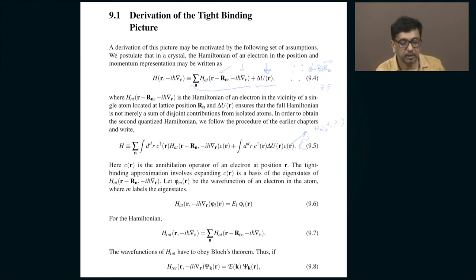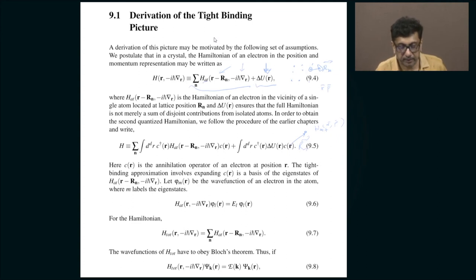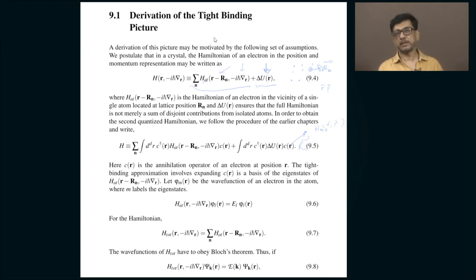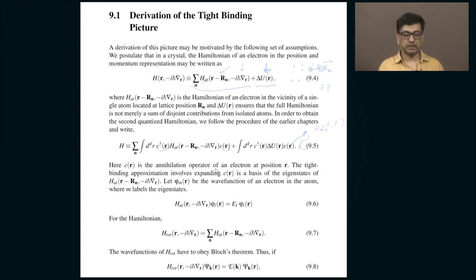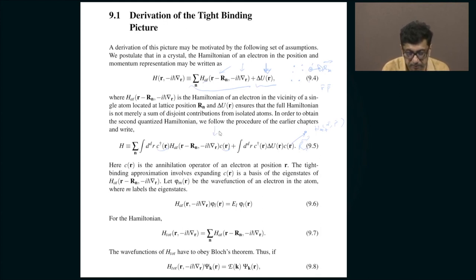Now that I have written down the Hamiltonian of a typical electron in such a solid, I can write the second quantized version for all the electrons together. That is the beauty of the second quantized approach — I do not have to sum from i = 1 to N where N is 10^36. I just do it for one typical atom, pre-multiply by a creation operator, post-multiply by an annihilation operator, and integrate over all electron locations to get the full Hamiltonian of the system.